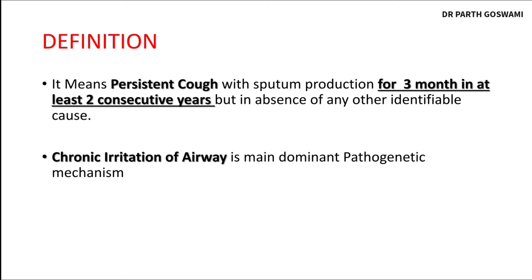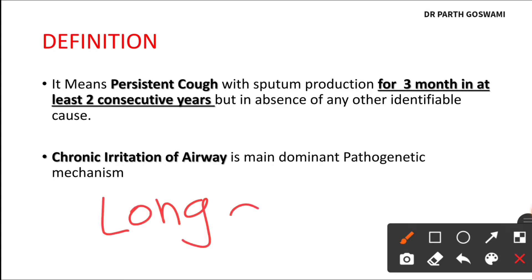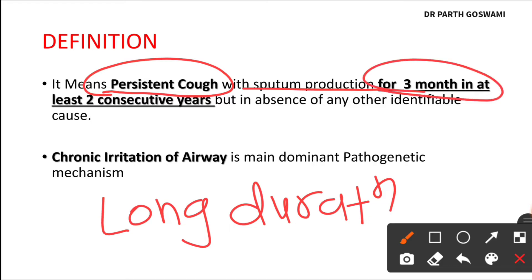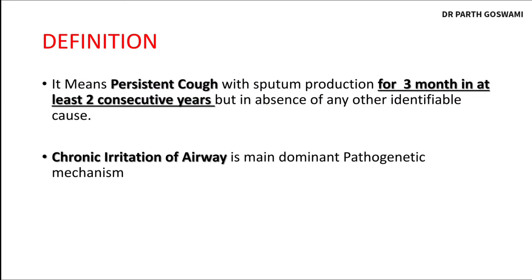What is chronic bronchitis? The name itself suggests - chronic means it is a long duration disease, and bronchitis means inflammation of bronchi. To label a case as chronic inflammation of bronchi, the patient needs to have persistent cough with sputum production for at least three months in two consecutive years, in the absence of any other identifiable cause.